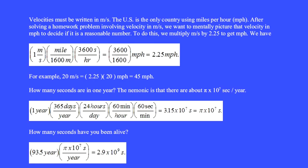Velocities must be written in meters per second. The US is the only country using miles per hour. After solving a homework problem involving velocity in meters per second, we want to mentally picture that velocity in miles per hour to decide if it is a reasonable number. To do this, we multiply meters per second by 2.25 to get miles per hour. We have 1 meter per second times 1 mile per 1,600 meters times 3,600 seconds per hour makes 3,600 over 1,600 miles per hour or 2.25 miles per hour.